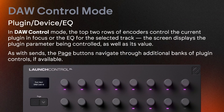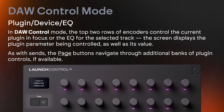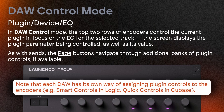In DAW control mode, the top two rows of encoders control the current plugin in focus or the EQ for the selected track. The screen displays the plugin parameter being controlled as well as its value. As with sends, the page buttons navigate through additional banks of plugin controls if available. Note that each DAW has its own way of assigning plugin controls to the encoders, for example smart controls in Logic or quick controls in Cubase.